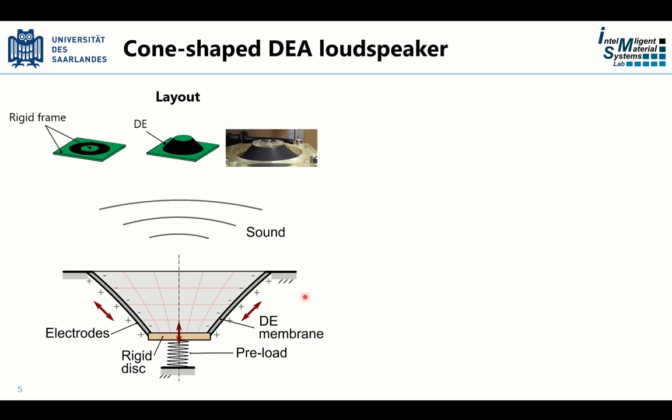A cone DE speaker resembles a traditional cone speaker, except that it does not have the voice coil, and instead it generates the sound thanks to the deformations created by the voltage. Compared to the bubble-like DE speaker, this layout has the advantage not to require a pneumatic utility to preload the membrane.